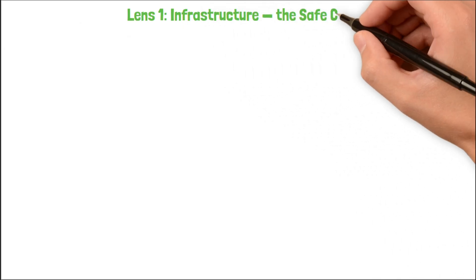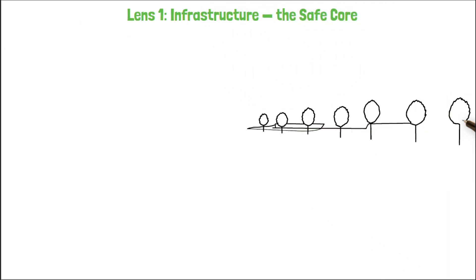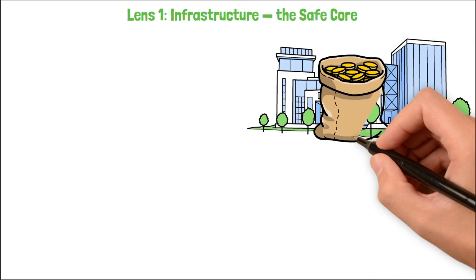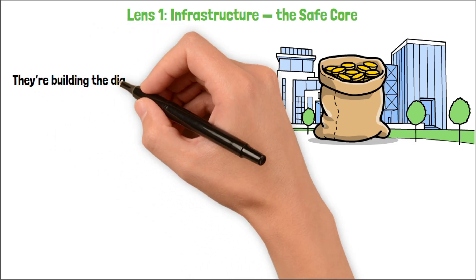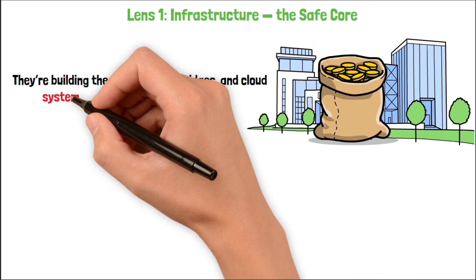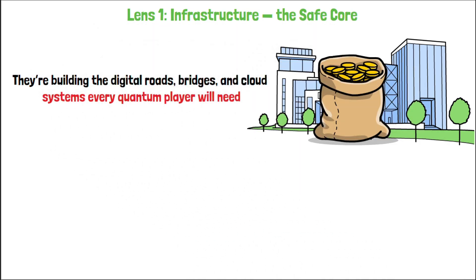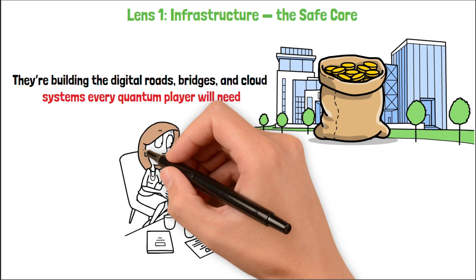Lens 1. Infrastructure. The safe core. These are the companies already making money from quantum tech today. They're not betting on one outcome. They're building the digital roads, bridges, and cloud systems every quantum player will need. No matter who wins. Safe. Reliable. Growing.